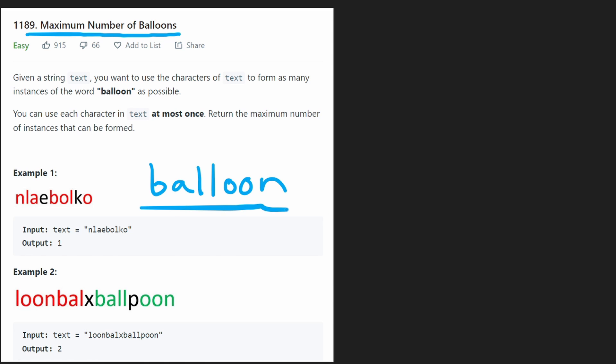So to create the word balloon, we need one B character, one A character, two L characters. So actually, let's start creating a map almost over here. L will need two characters. O will also need two characters. N will need one character.